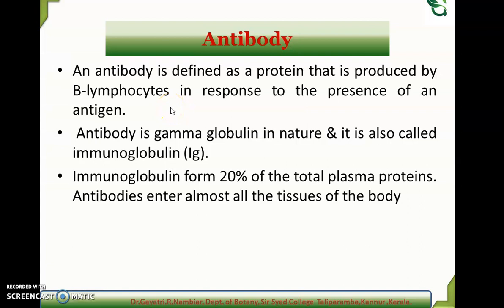These antibodies are produced by B lymphocytes in response to the presence of an antigen. An antigen is the foreign particle entering our body — it may be bacteria, virus, fungi, or any endogenous antigen derived from the body. These proteinaceous substances produced by B lymphocytes are collectively known as immunoglobulins, another name for antibody.